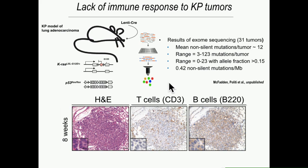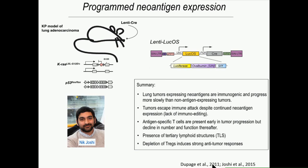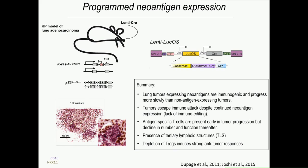Given that result, Michael Dupage decided to ask what if we provide antigens to these tumors for the immune system to see. Using this bifunctional lentiviral approach — Cre plus luciferase linked to strong T-cell antigens, the OVA antigen and the 2C antigen — these come along with Cre and get expressed at the time of tumor initiation. As summarized in Michael's published paper and in follow-up work carried out by Nick Joshi, we can now observe a strong immune response: T-cell infiltration into these tumors, especially at early stages. At 8 to 12 weeks, we see many T-cells responding to and infiltrating these tumors.